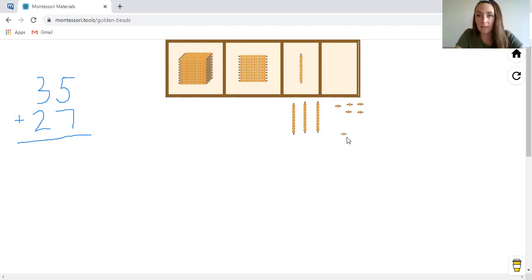You have 35 and then we're going to add 27. So we need seven unit beads for our units, right? One, two, three, four, five, six, seven. And then we need two 10 bars: one, two.